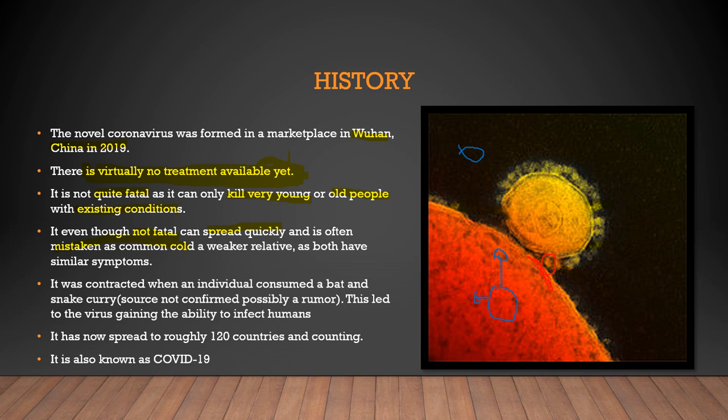One more thing that makes it so dangerous is that it's mistaken for the common cold. Common cold is seasonal and weak, whereas the symptoms aggravate in coronavirus — it's a stronger relative of the common cold with similar symptoms at first. It was contracted, according to rumor, when an individual consumed a bat and snake curry. This is just a rumor — we aren't sure whether this is true.